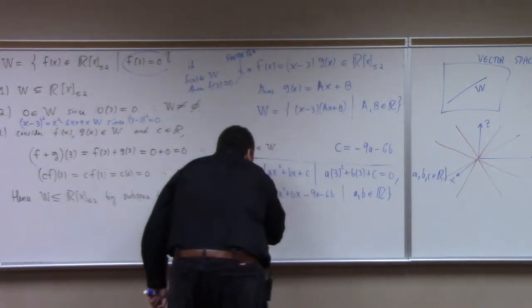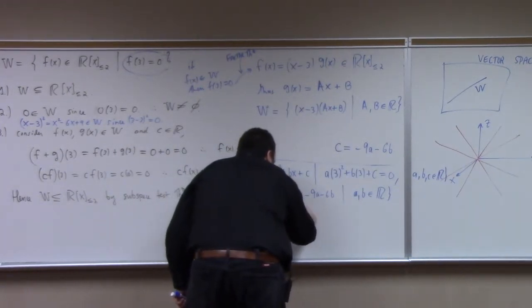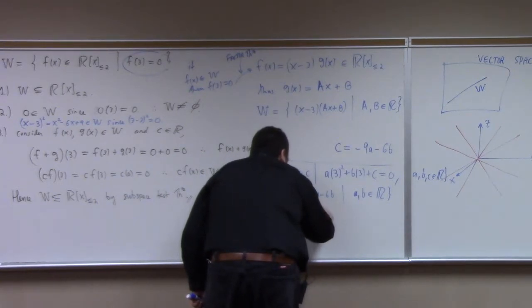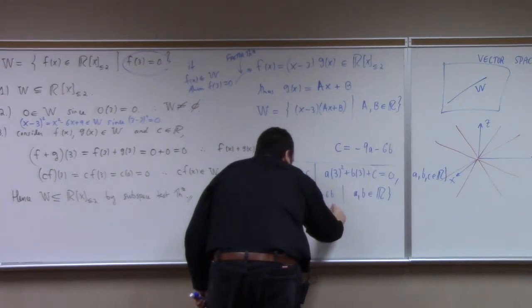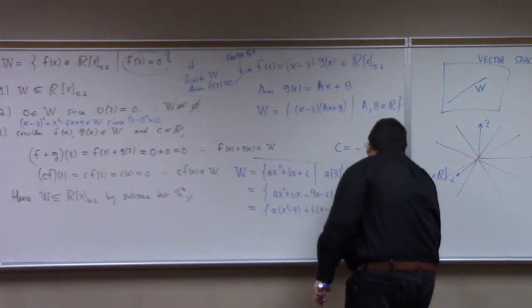This is really what? A times x squared minus 9 plus b times what? x minus 6, I think. Do tell me if I make an arithmetic mistake here.